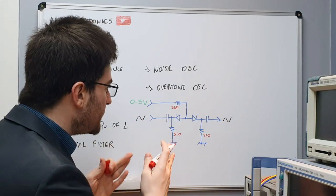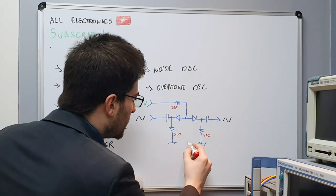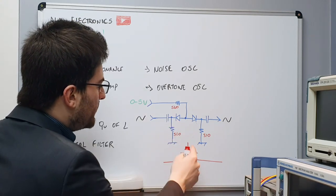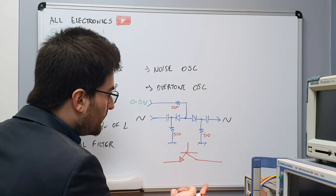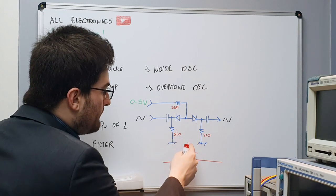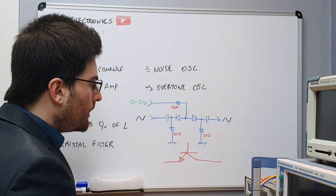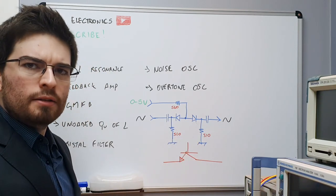So if we place an NPN transistor here, the first diode will be the base emitter junction, and the other diode will be the base collector junction, and this needs to work. So let's try!